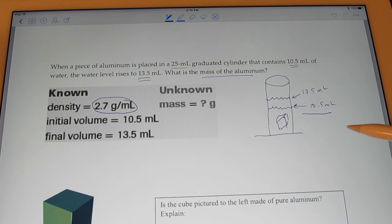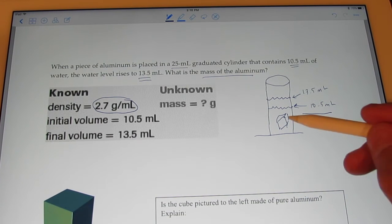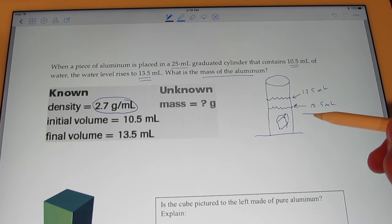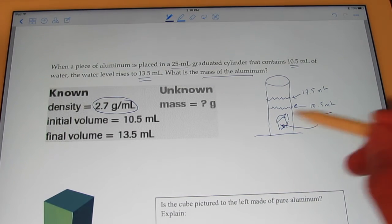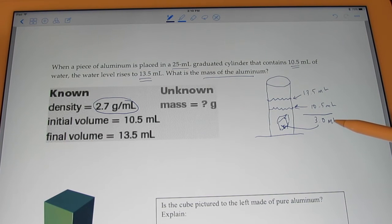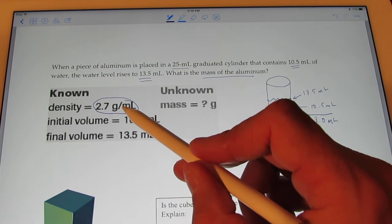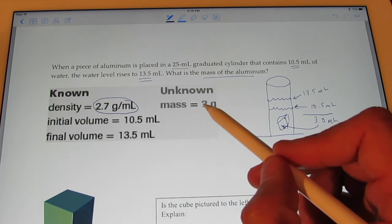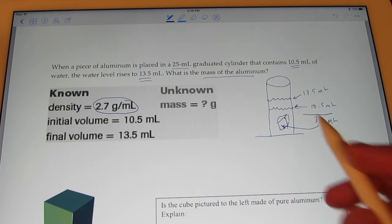Well, wouldn't the difference here give me the volume of the aluminum chunk? Yeah. It looks like the difference is 3 milliliters. So, that would be the volume of my piece of aluminum. So, if I know the volume, can't I use the density as a conversion factor to find the grams? Yes, I can.